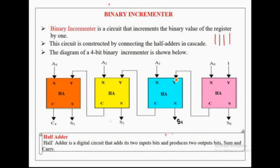Now let's check how this binary incrementer performs the incrementation operation by assigning bit values of the binary number to be incremented. Suppose the binary number to be incremented is 0110. Its bit values are assigned to the binary incrementer through A0 to A3 as shown in this figure, where 0, 1, 1, 0 are assigned to the A0 to A3 inputs.